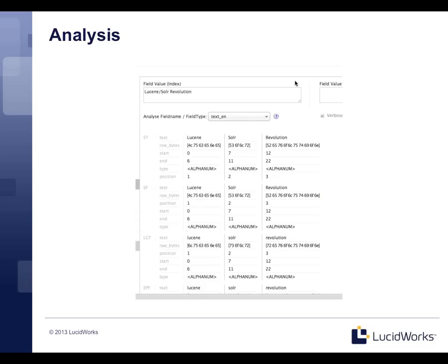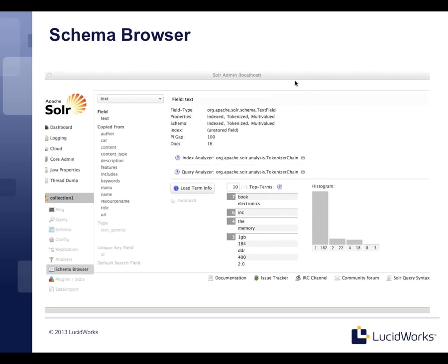We also have a schema browser, which allows you to pick any field or field type in the index, see what type they are, see their analysis chain and query analysis chain, look at stats of the terms in there, see the term info, and even a histogram showing how terms spread out across the counts. There's a lot of nice introspection you can do right through this UI.